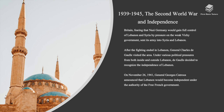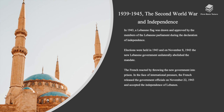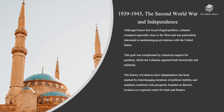After the fighting ended in Lebanon, General Charles de Gaulle visited the area. Under various political pressures from both inside and outside Lebanon, de Gaulle decided to recognize the independence of Lebanon. On November 26, 1941, General Georges Catroux announced that Lebanon would become independent under the authority of the Free French government. In 1943, a Lebanese flag was drawn and approved by members of the Lebanese parliament during the Declaration of Independence. Elections were held in 1943, and in November 1943 the new Lebanese government unilaterally abolished the mandate. The French reacted by throwing the new government into prison. In the face of international pressure, the French released the government officials on November 22, 1943, and accepted the independence of Lebanon. Although France lost its privileged position, Lebanon remained especially close to the West and was particularly interested in maintaining good relations with the United States.